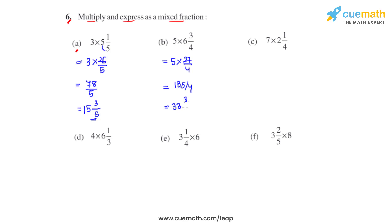The mixed fraction will be 33 and 3 fourths. Coming to part c, we have 7 times 2 and 1 fourths. Converting 2 1 fourths into an improper fraction: 4 times 2 is 8, 8 plus 1 is 9, so 9 over 4. That gives us 63 over 4.